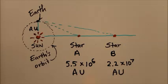Star B is 2.2 times 10 to the 7th astronomical units away from us.